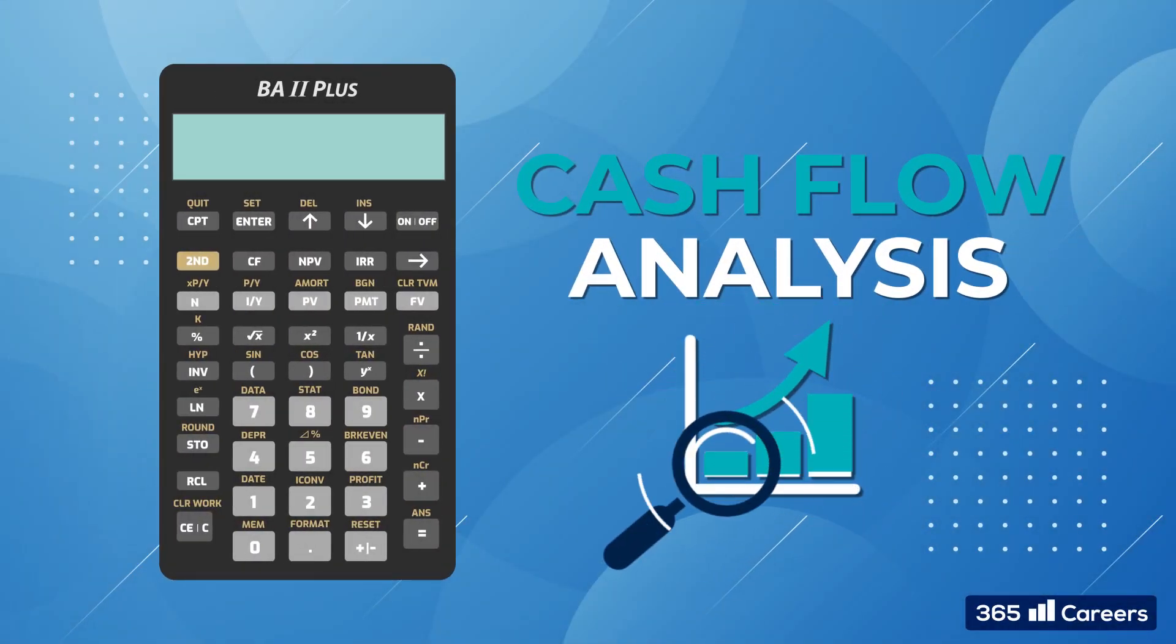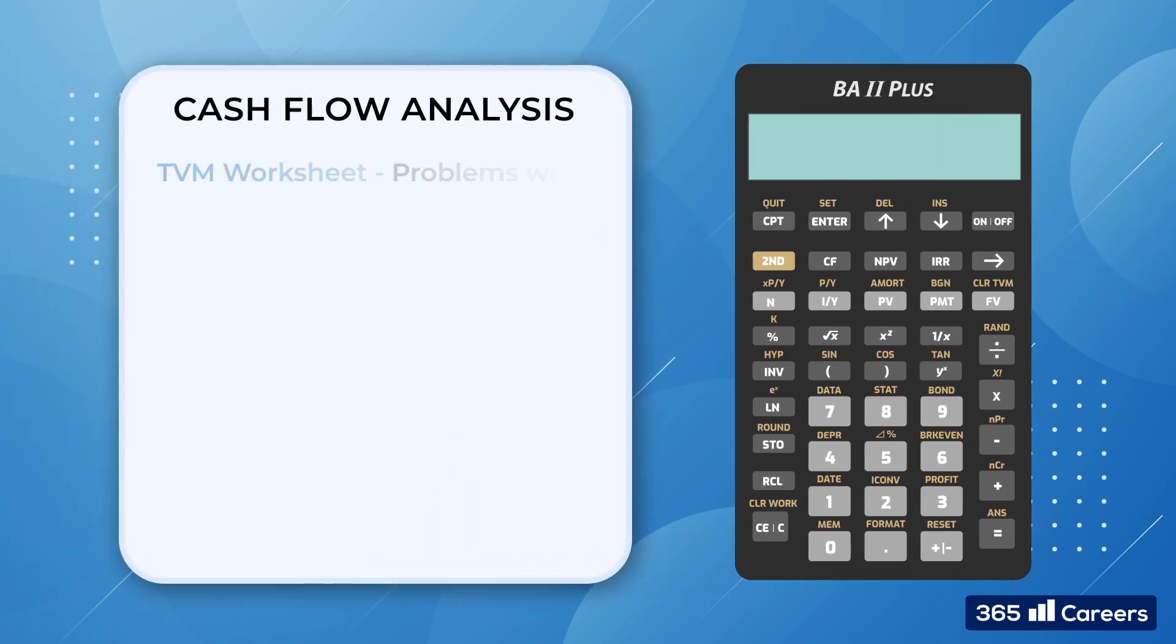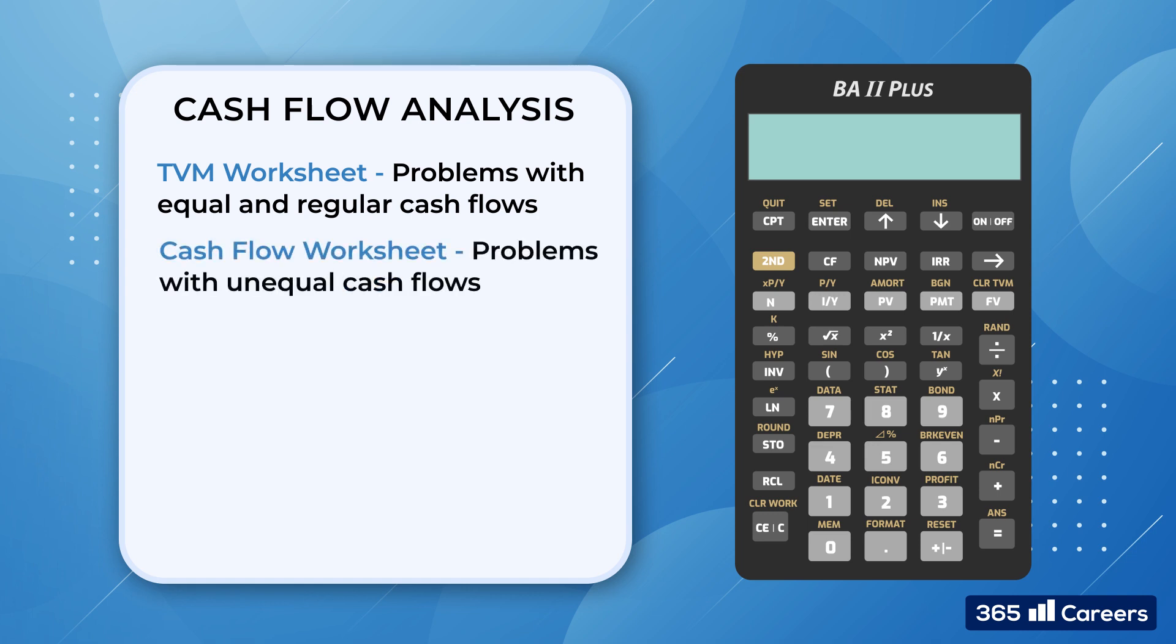As we mentioned before, we can use the TVM worksheet of the calculator to solve problems with equal and regular cash flows. By definition, it is just annuities that offer such a payment structure. For problems with unequal cash flows, we use the cash flow worksheet.